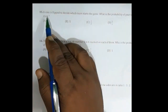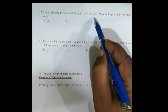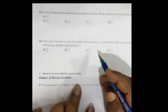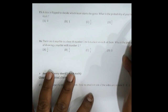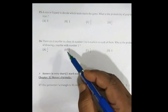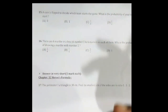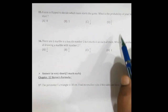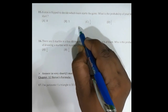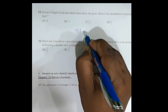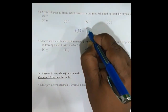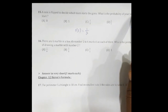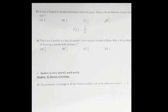Question 15: A coin is flipped to decide which team starts the game. What is the probability that your team will start? A coin has two faces — head and tail. The face that decides your team starting is one, and the total number of faces is two. Therefore the probability that your team will start is 1/2.